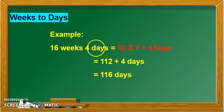Sixteen weeks and four days is how many days? Four days is already in days, so we will just add four. And sixteen weeks is how many days? Sixteen multiplied by seven. Sixteen sevens are one hundred and twelve plus four.